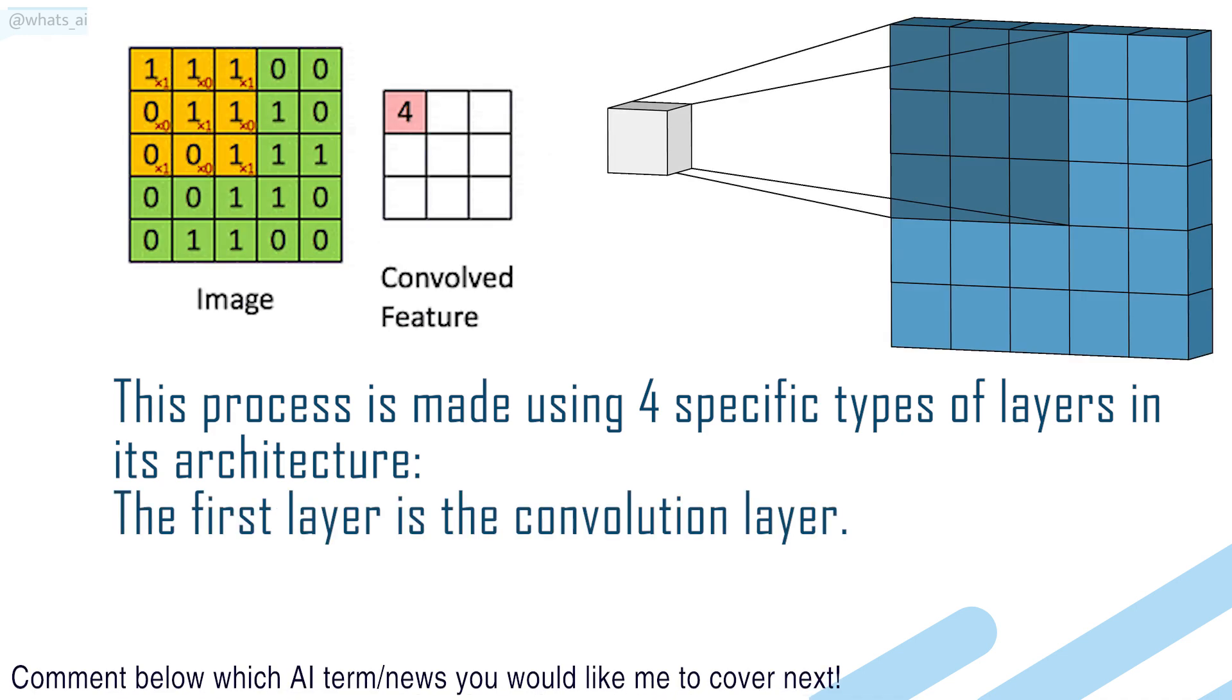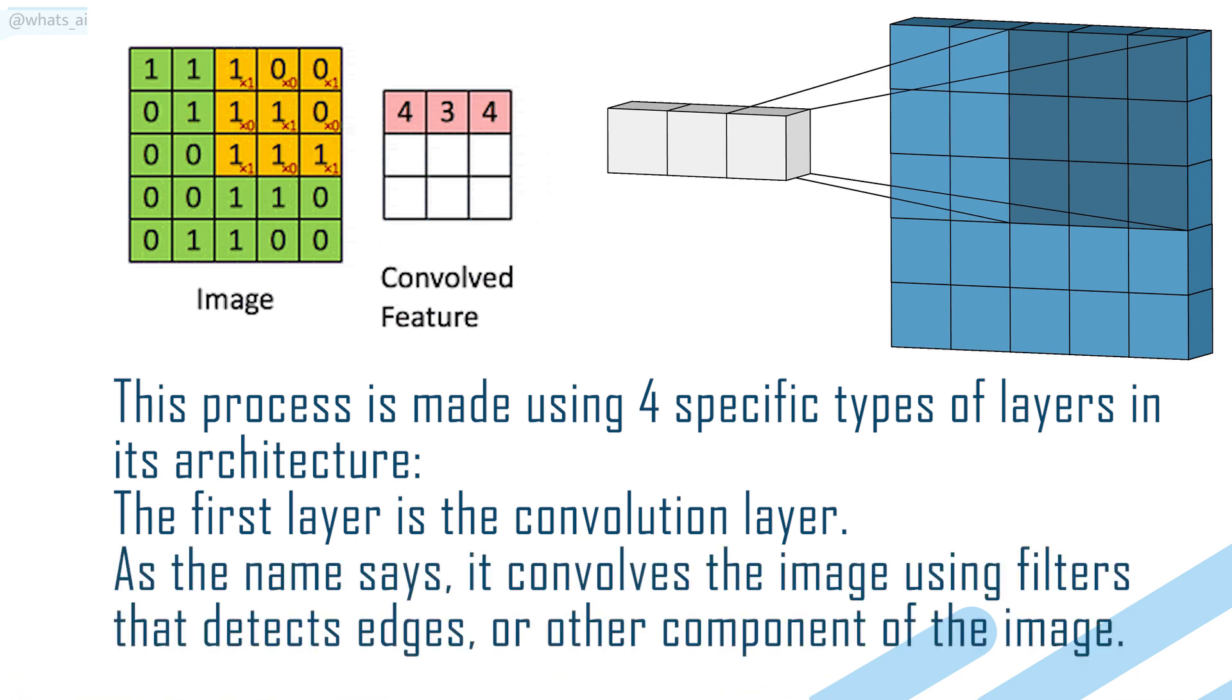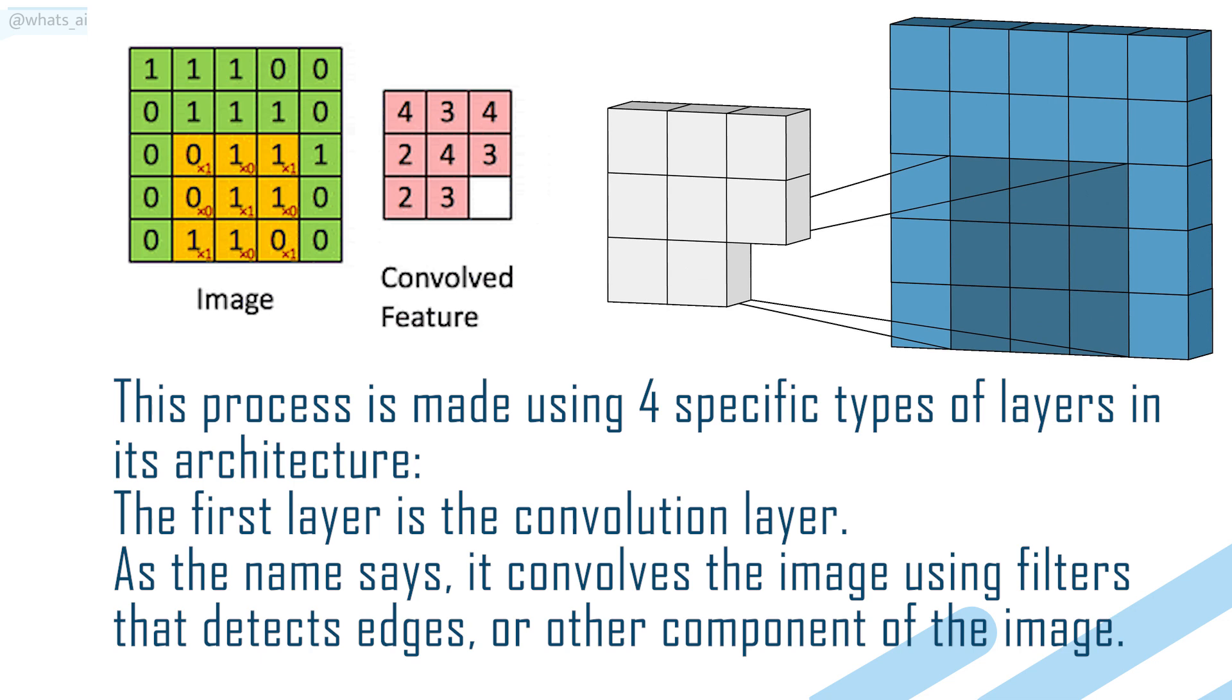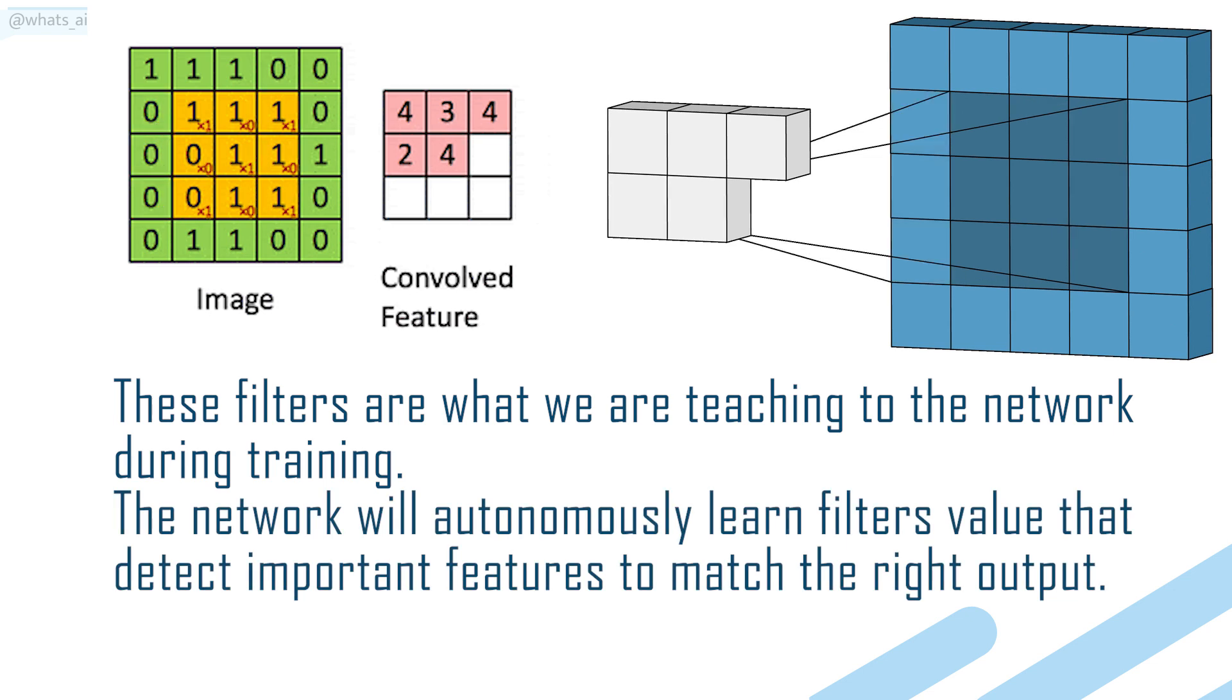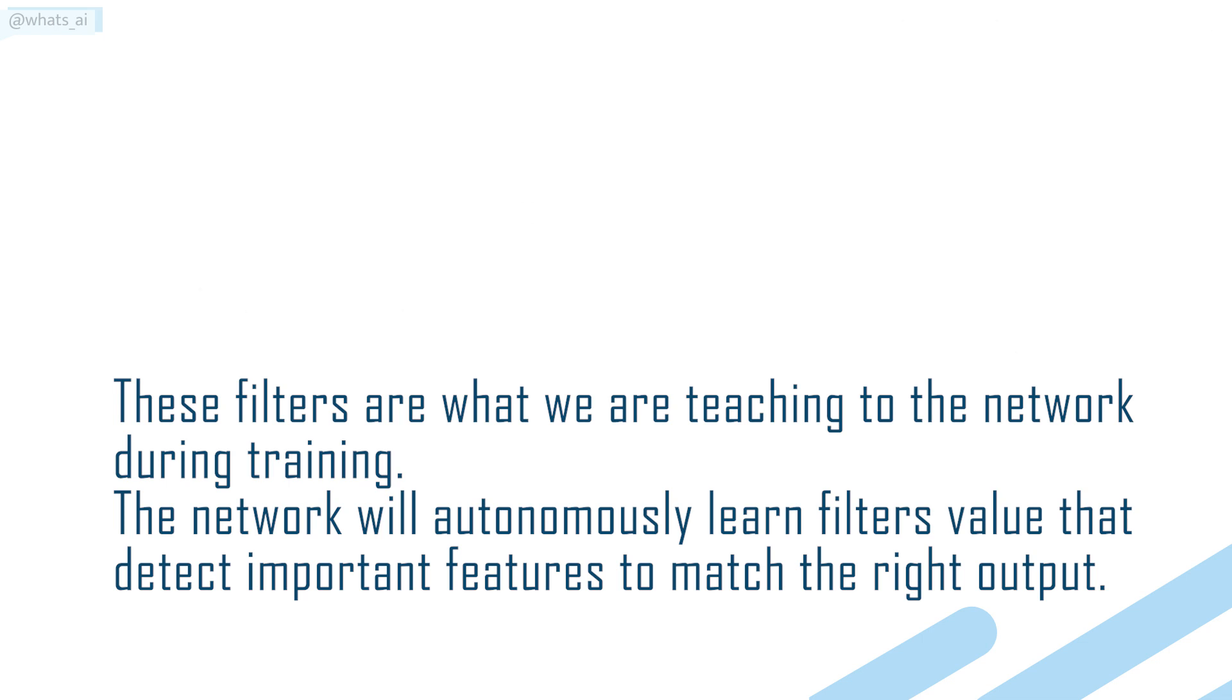The first layer is the convolutional layer. As the name says, it convolves the image using filters that detect edges or other components of the image. These filters are what we are teaching to the network during training. The network will autonomously learn filter values that detect important features to match the right output.